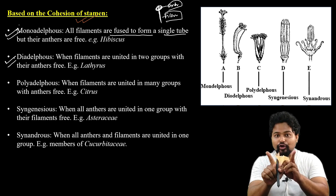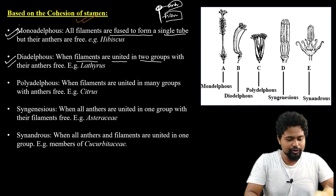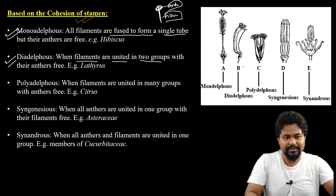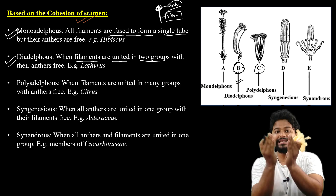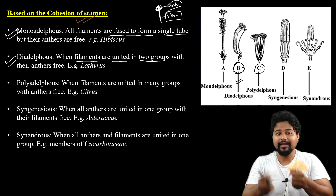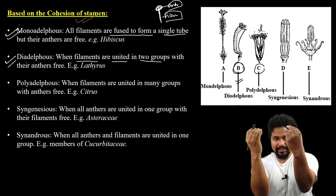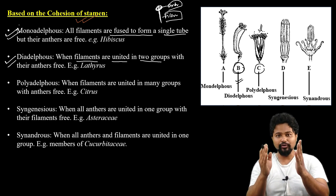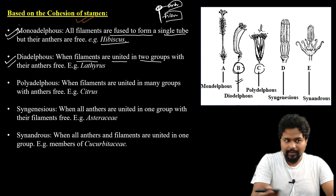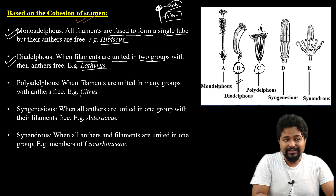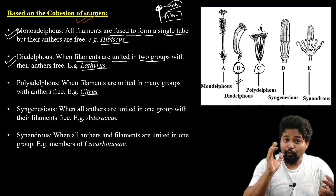Similarly, diadelphous — filaments are united in two groups. This condition is diadelphous. Polyadelphous — filaments are united in more than two groups. An example of polyadelphous is Lathyrus; polyadelphous is also seen in Citrus. This is a polyadelphous condition.